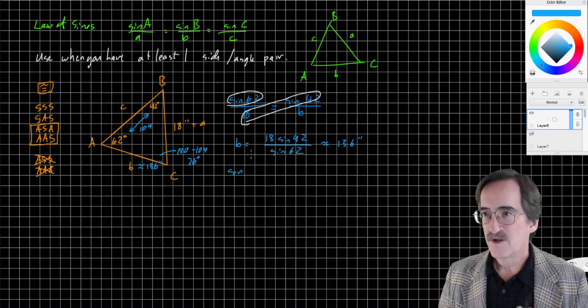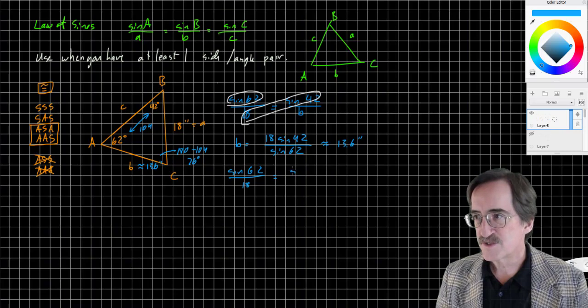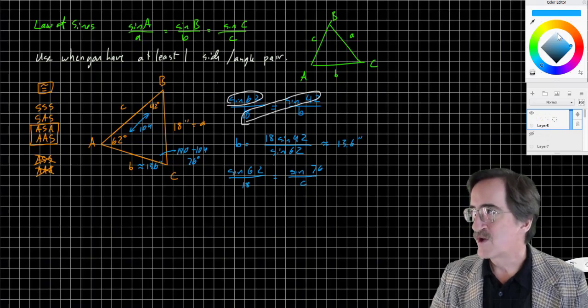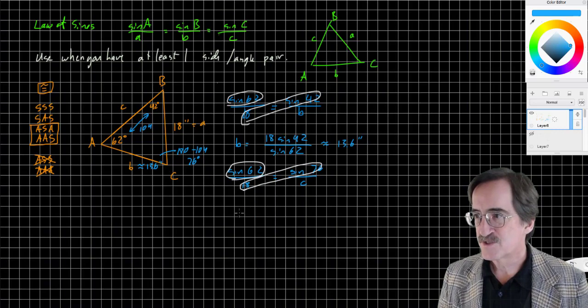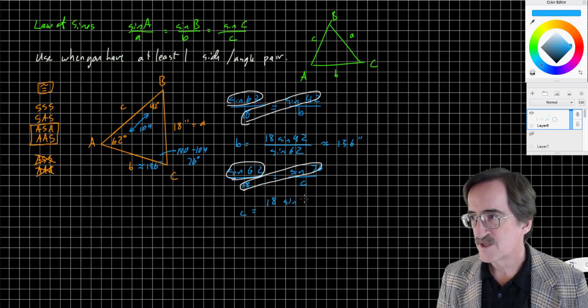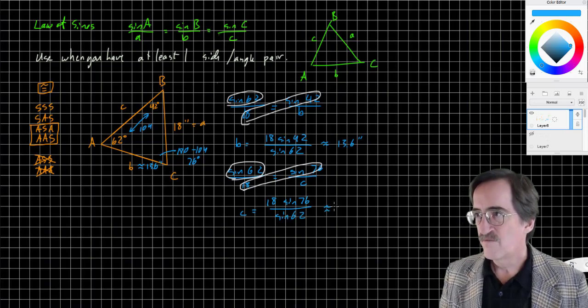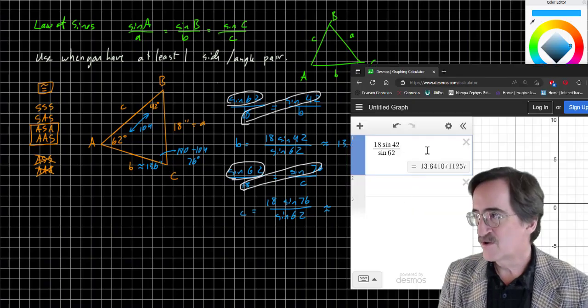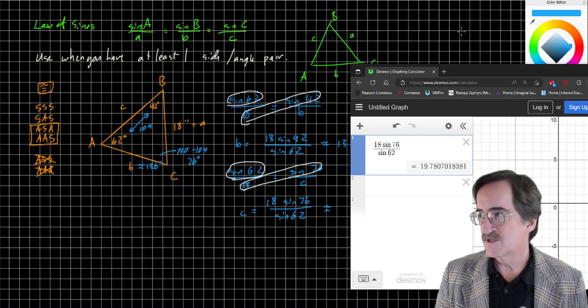So we can write sine of 62, starting with a again since that's the known pair, over 18 equals sine C, 76, over little c. Again, multiply the diagonal C is not on, divide by the remaining side. And so little c equals 18 sine 76 over sine 62. Very similar to the previous: this is sine 76 over sine 62. So calculator, sine 76 over sine 62 times 18 is 19.8.